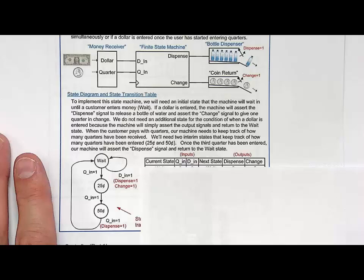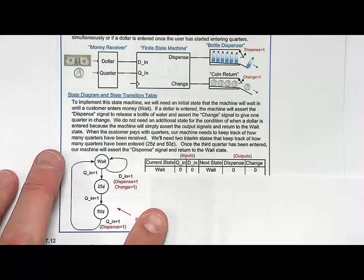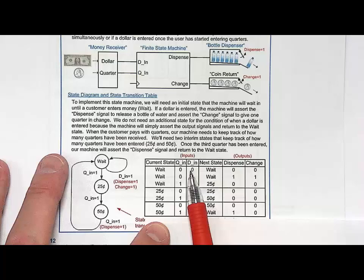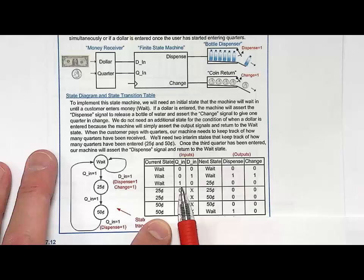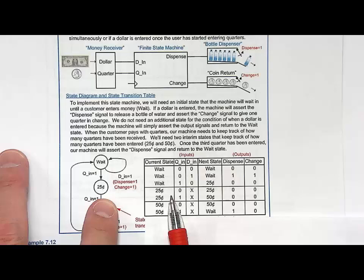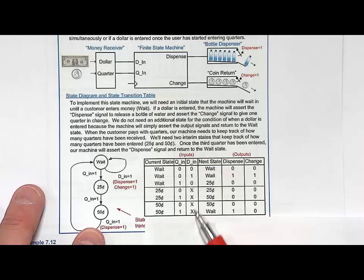Here is our state transition table. We have our current state, QN and DN as inputs, next state, dispense and change. We list out all possible states with all possible input values. Notice we never allow the condition of both a dollar and a quarter coming in simultaneously. When we're in the 25-cent condition, we don't care what DN is — the money receiver just returns it. Same when we're in the 50-cent state, we ignore the dollar. This matches the state diagram.